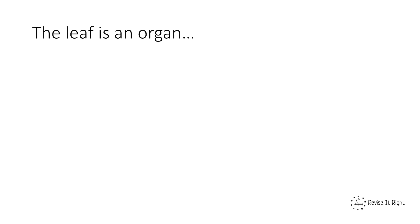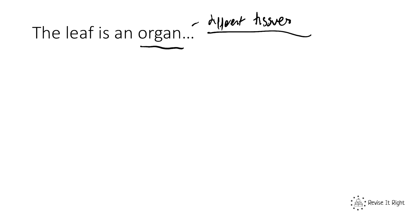The leaf is an organ. An organ is a group of different tissues working together, which means that the leaf is made up of tissues. Let's look at those now. Our first layer of the leaf, as I'm drawing here, is called the epidermal tissue.